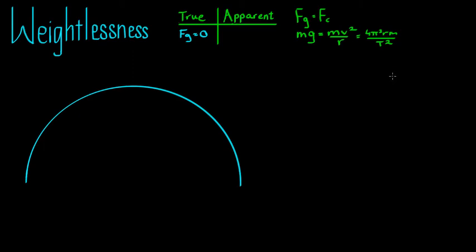Or true weightlessness could also occur at a point like the Lagrangian point, which is a point between say the Earth and the Moon where the gravity force of the Earth is exactly balanced out by the gravity force of the Moon. So those are two places where the sum of the gravity forces equals zero.